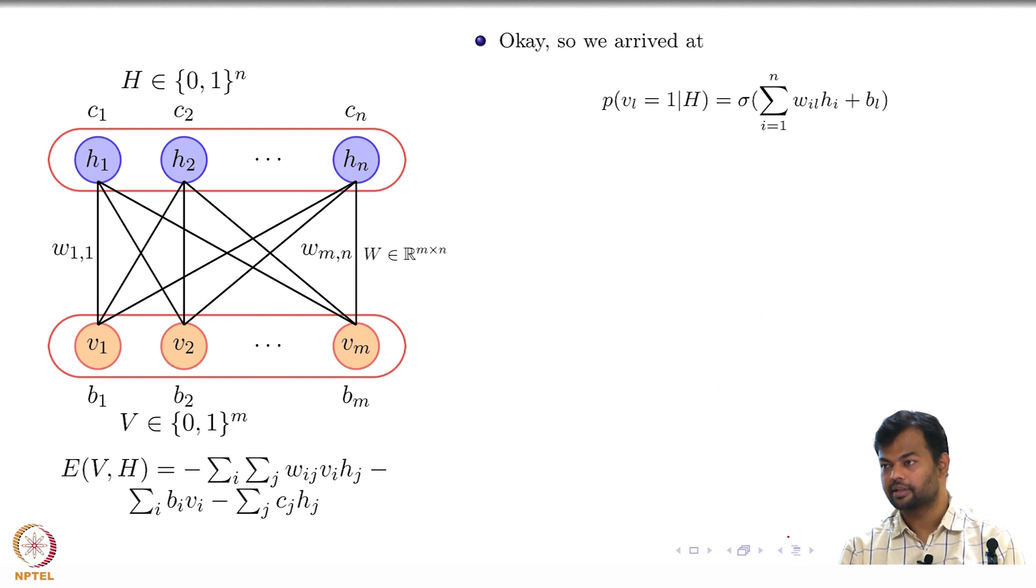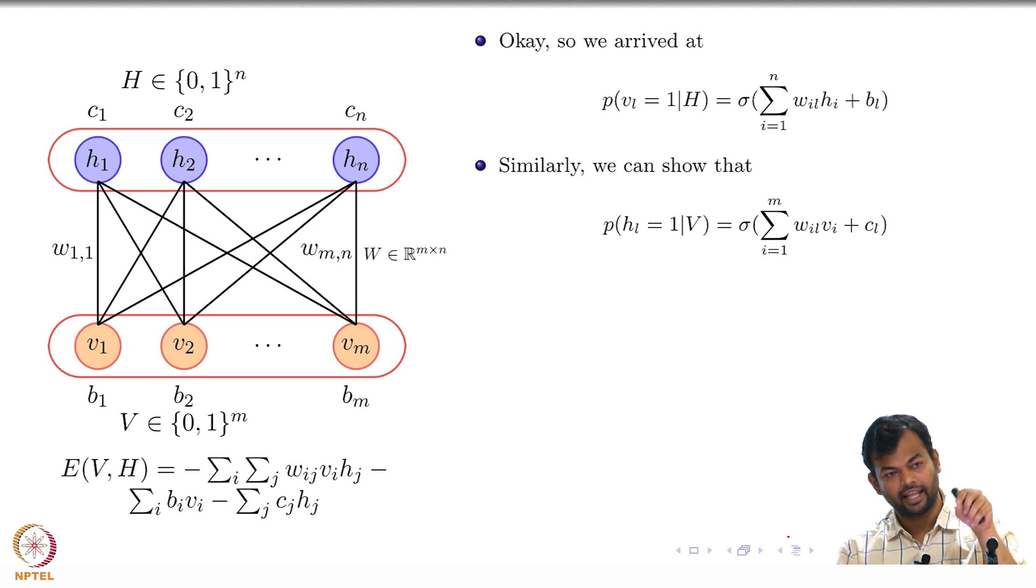Similarly, if I were to compute the probability of the Lth hidden unit taking on the value 1 by the same kind of derivation, I will get this form. That it is again a sigmoid of the weighted sum of all the inputs connected to it. And what are the inputs connected to it? All the visible units. Is that fine? Can you tell me why did we have these additional factors? The biases. So now can you think of this as a neural network? We have got the same form as we have seen for a neural network.